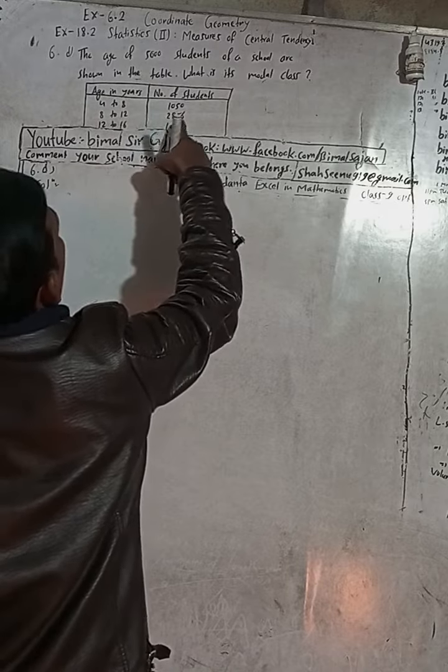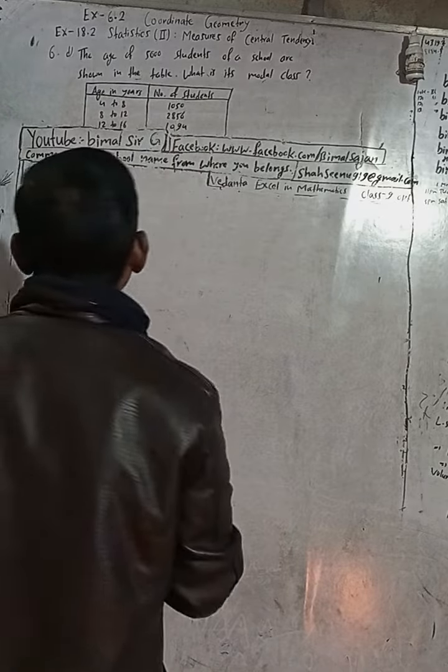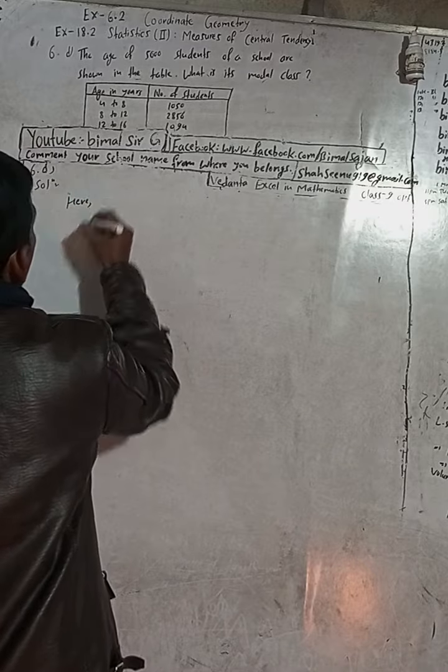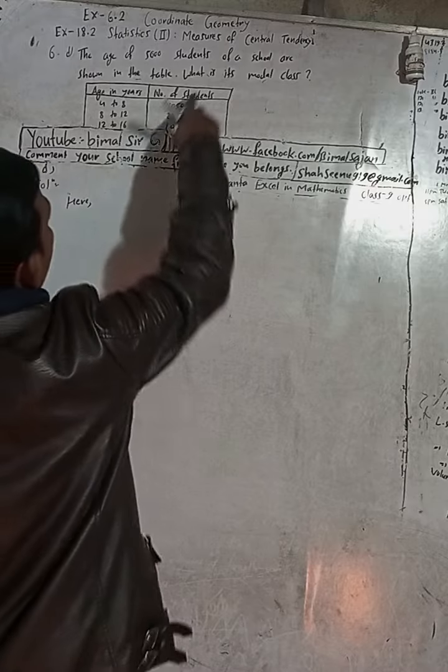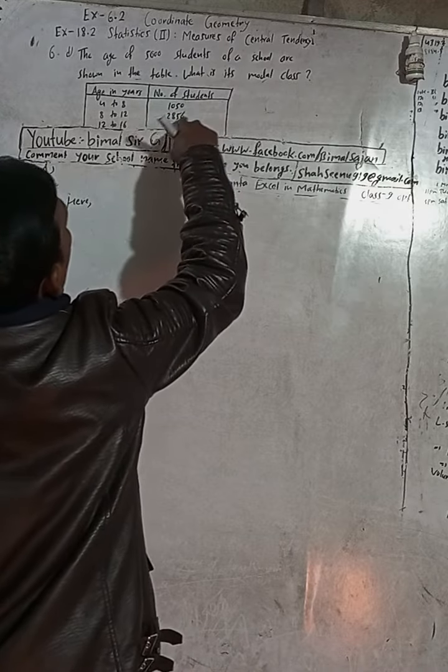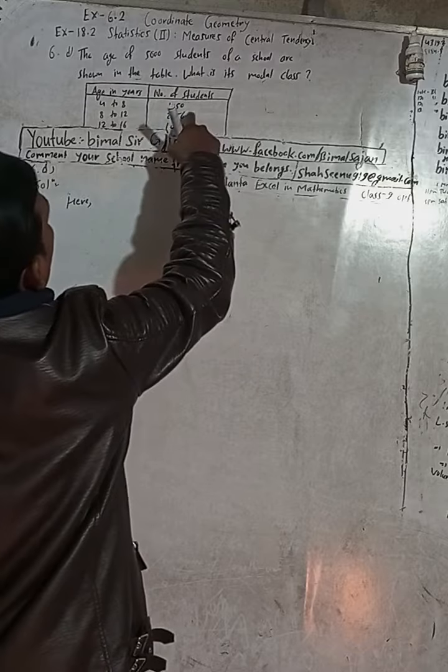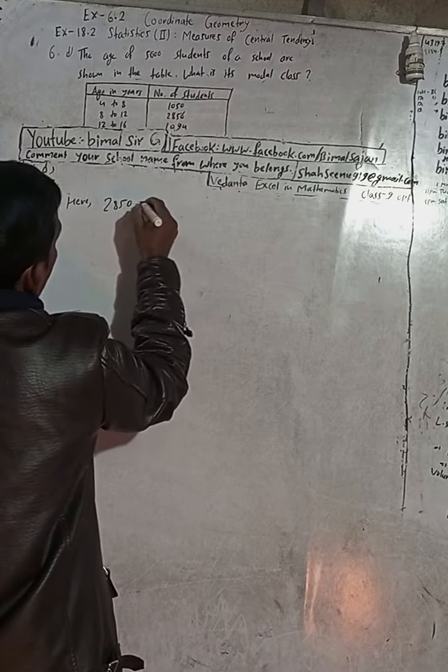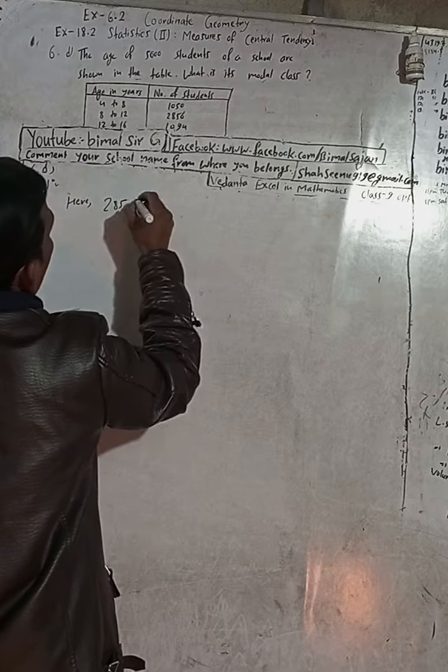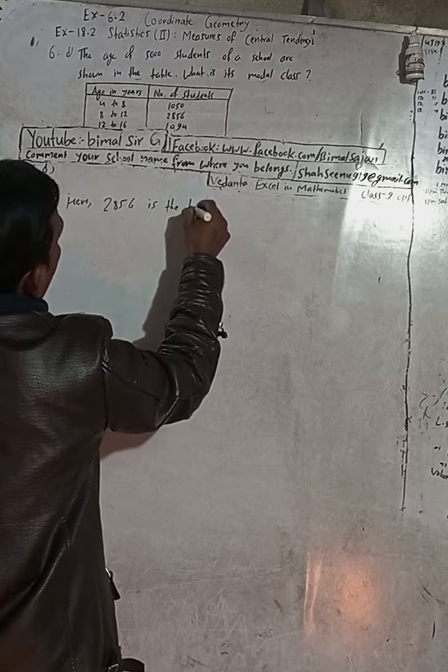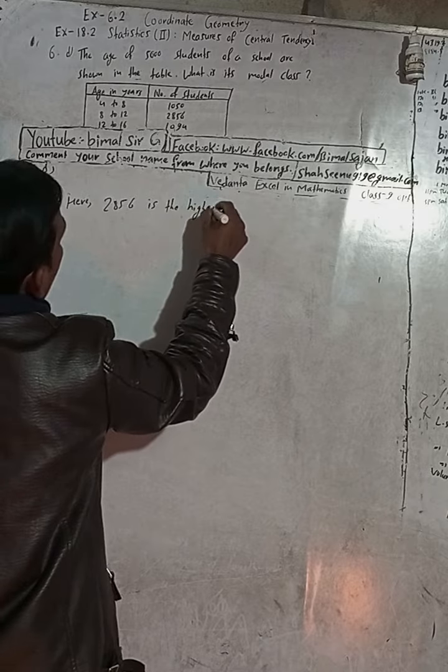Now, which is the highest frequency? These are the frequencies: 1050, 2856, and 1094. So 2856 is the highest frequency.